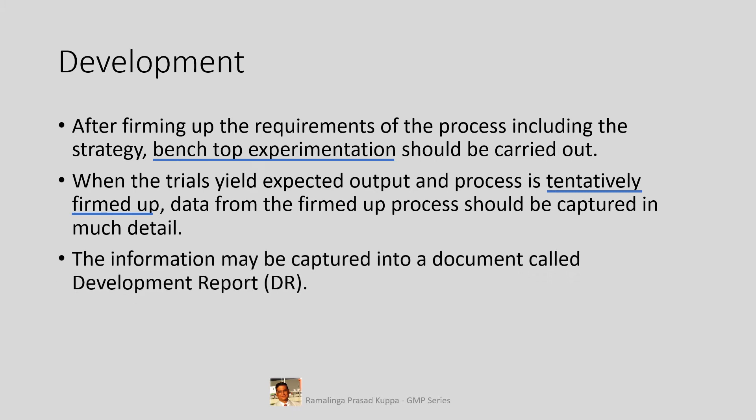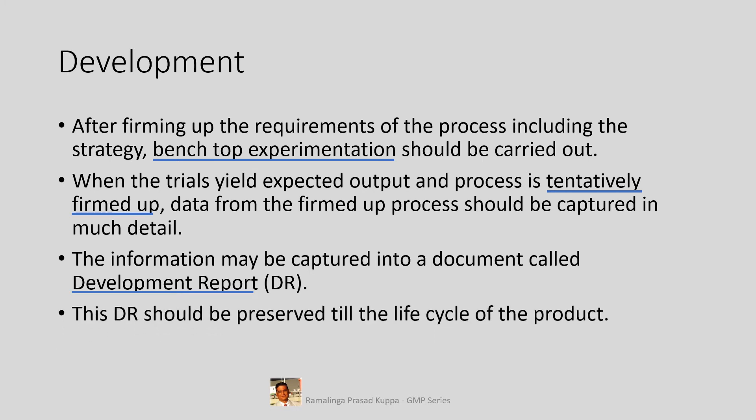The information may be captured into a document called the Development Report (DR). Entire information generated at this point should be recorded in a controlled fashion. GMP controls are not much required here, but it is necessary to record the materials used, its specification number, grade, unit of measure, in-process tests done, yields at various stages of process, and acceptance criteria. Data may be recorded in a controlled register or in a controlled draft BPCR. This register or BPCR would be part of the development report — this would be the first step of technology transfer activity. The development report should be preserved till the life cycle of the product.